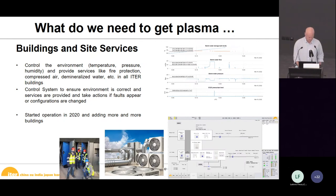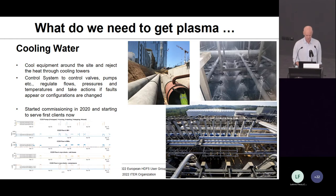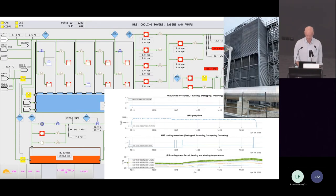Next, we need buildings and site services to control the environment in the buildings where all the equipment is located, but also to provide services like fire protection and distribution of compressed air, demineralized water, etc. This also started operation in 2020 and adds more buildings as we go along. Then we have cooling water — we need to cool equipment all around the site through big pipes. The control system must control all valves, pumps, etc., and regulate flows, pressures, and temperatures. This started commissioning in 2020 and is now serving the first clients.